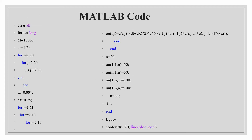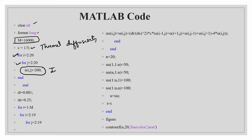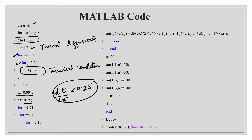First, I clear all variables and use format long for higher decimal precision. I set the number of iterations to 16,000 and the thermal diffusivity c = 1/3. Using a loop from i=2 to 20 and j=2 to 20, I set the initial condition — all interior points are initialized to 200 degrees Celsius. Then I set Δt and Δx such that c·Δt/Δx² is less than 0.25, so the stability criterion is met.